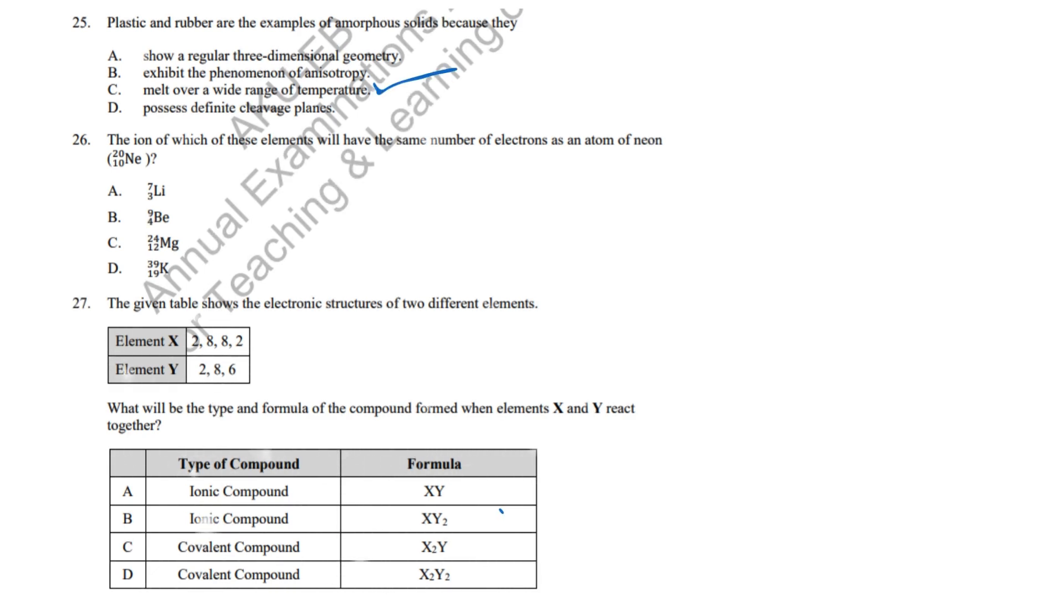Question 26: Mg-2-plus has 10 electrons, the same as neon. Correct answer: C, Mg-2-plus. Question 27: X, a metal, donates 2 electrons to Y, a non-metal, forming an ionic compound, XY2. Correct answer: B, Ionic compound, XY2.